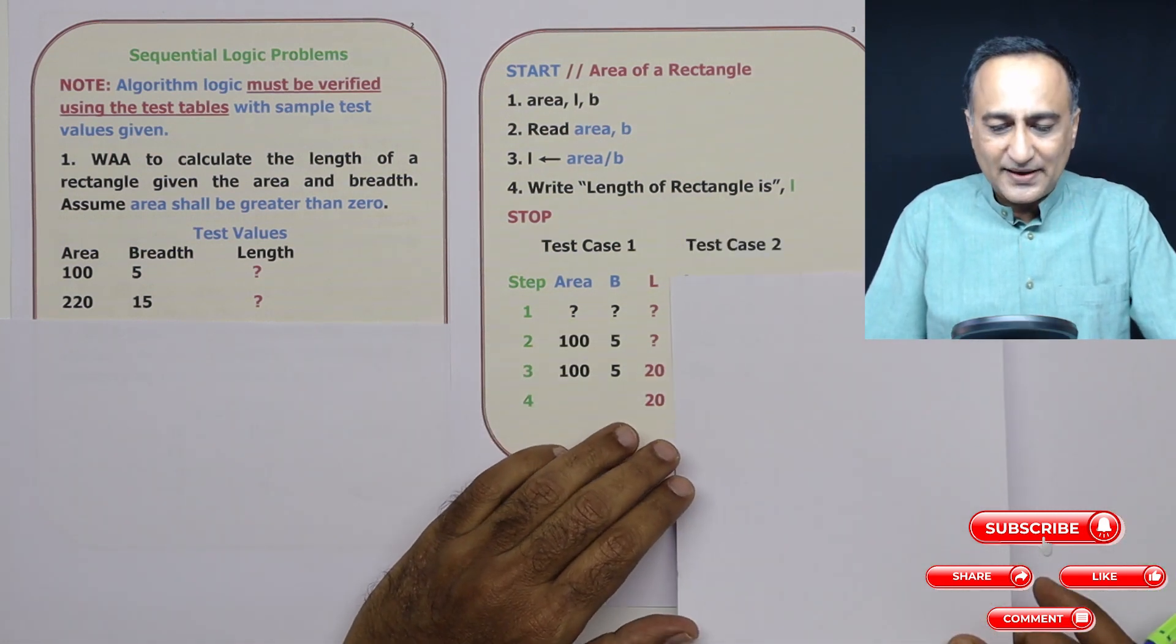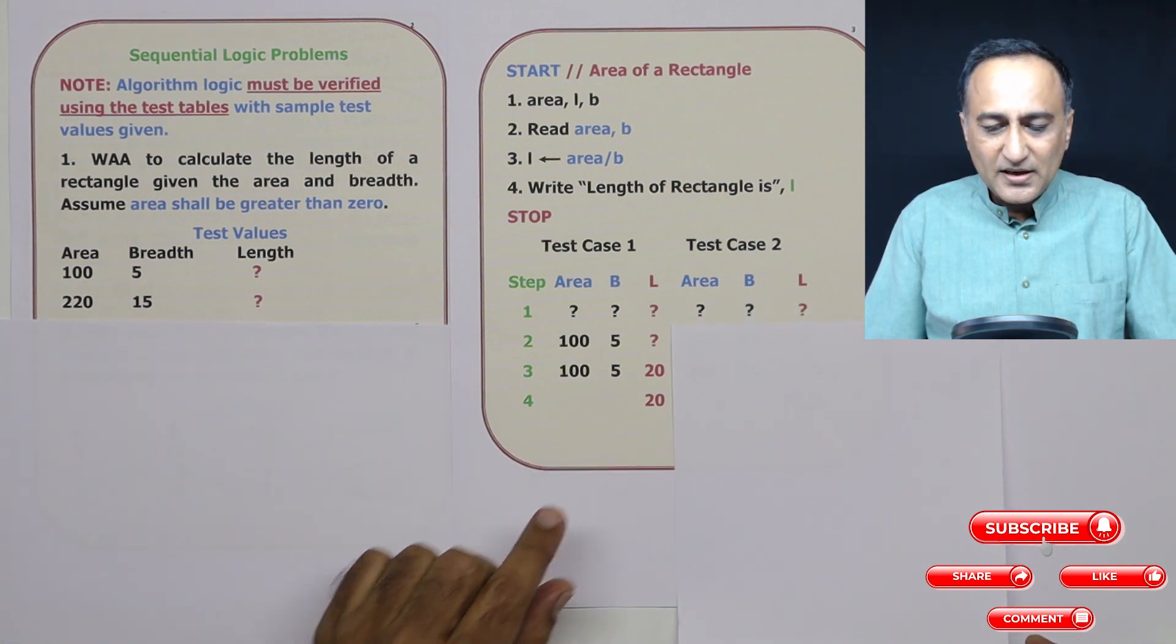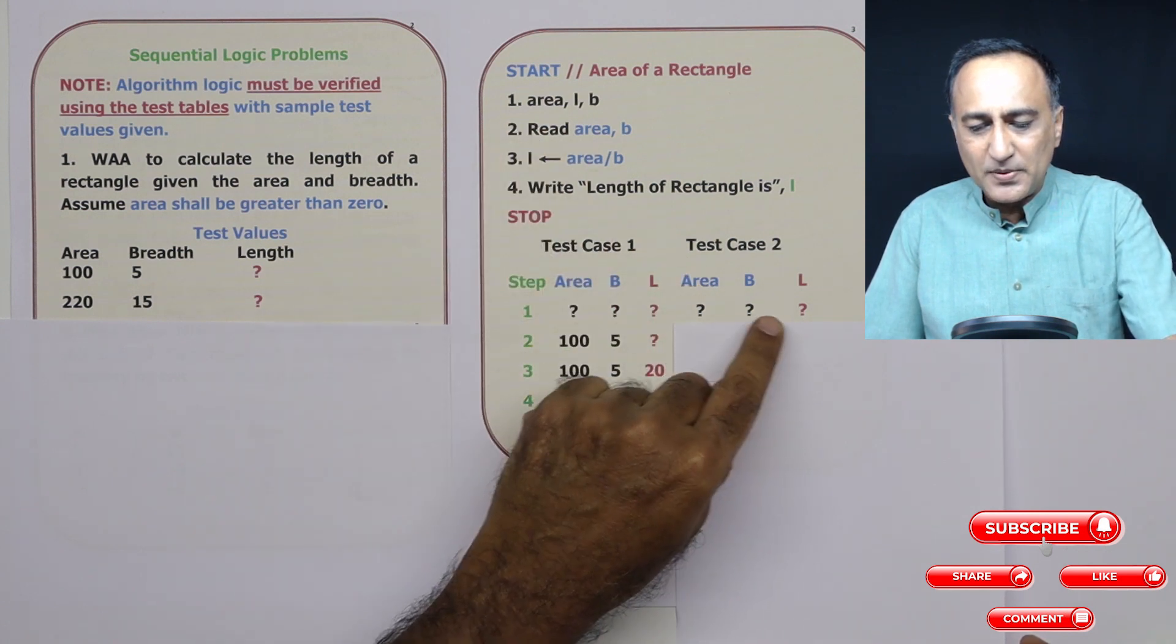Now test case two looking at 220 and 15. Initially, in step one, I do not know the value of area, breadth, and length.